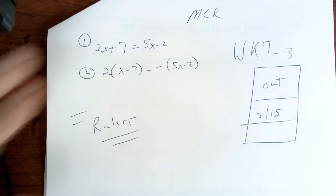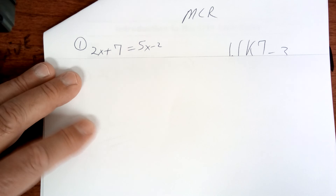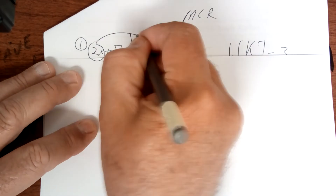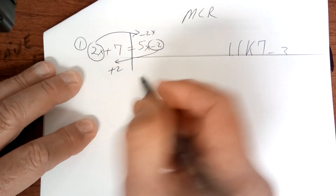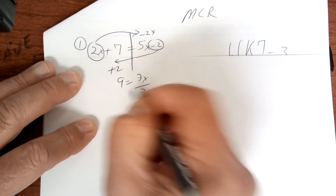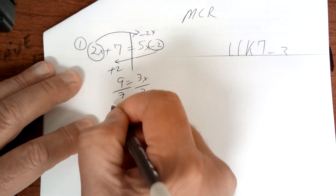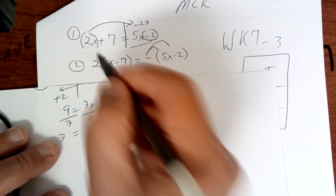Now we're going to turn our attention to MCR class. Here's your bell work. What I would do is move the 2x over to get negative 2x, move the constant to get plus 2, and that gives you 9 equals 3x. Divide by 3 and you get x equals 3. For the next one, make sure you distribute the negative sign and the 2 — we'll skip that for now.